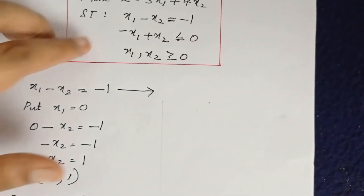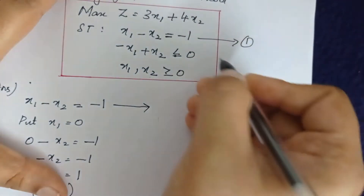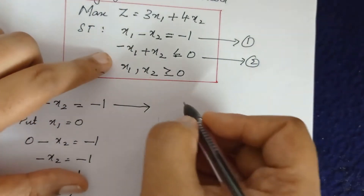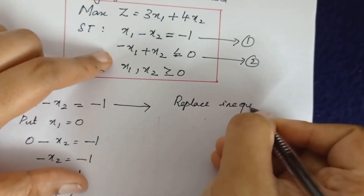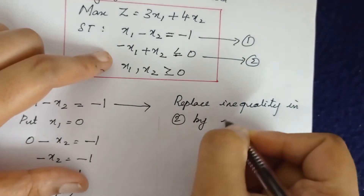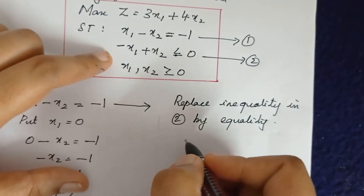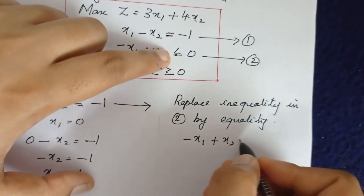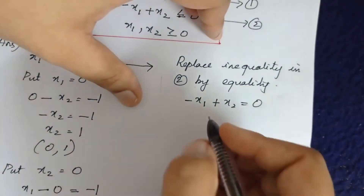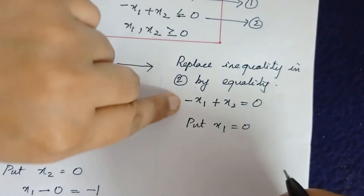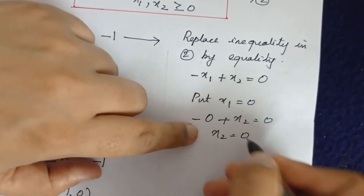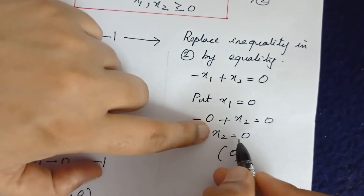Moving to the second constraint, we replace the inequality by equality: -x1 + x2 = 0. Put x1 = 0: -0 + x2 = 0, so x2 = 0. We get the point (0, 0), which is the origin.